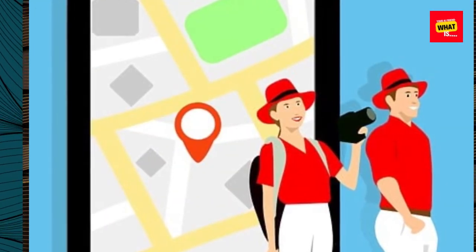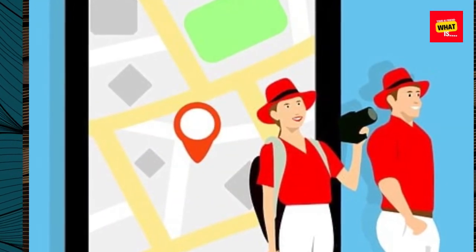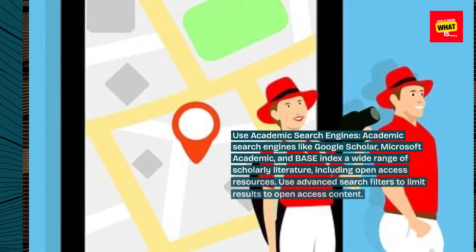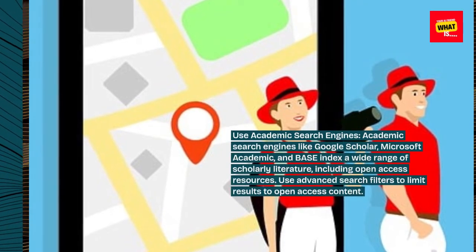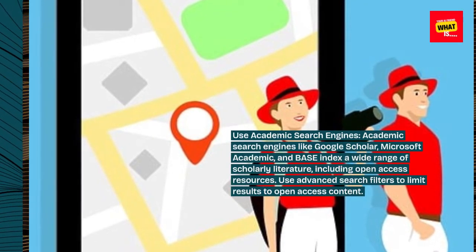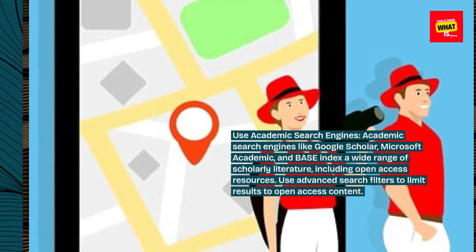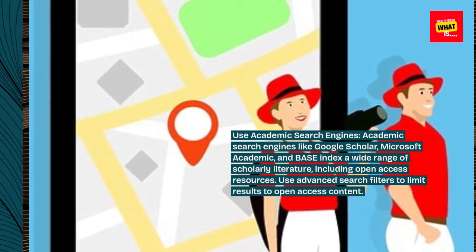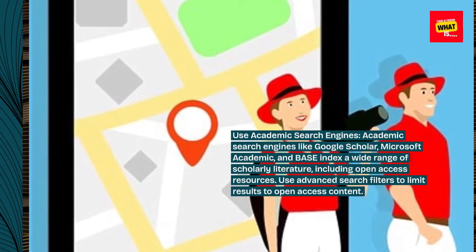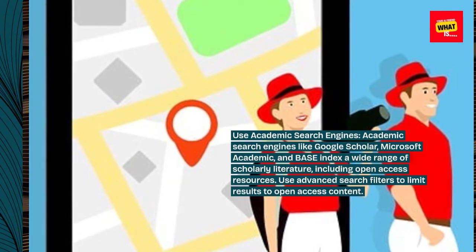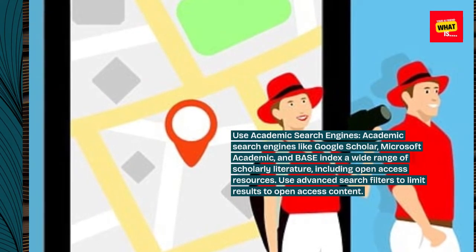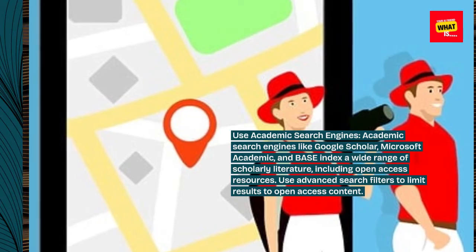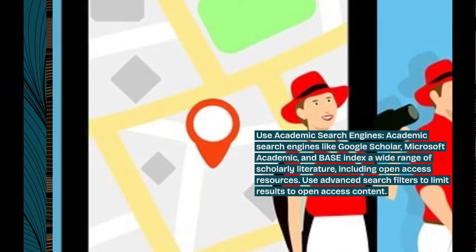Use Academic Search Engines: academic search engines like Google Scholar, Microsoft Academic, and BASE index a wide range of scholarly literature, including open access resources. Use advanced search filters to limit results to open access content.